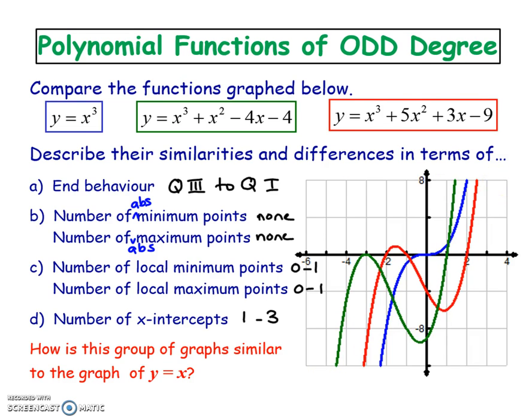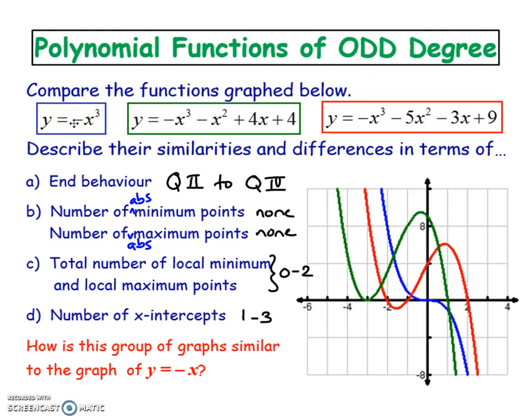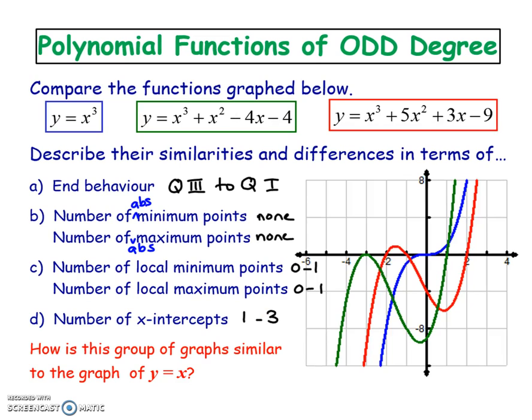They all extend from this direction to this direction. If I put a negative as a leading coefficient, we should expect that it reflects over the x-axis and goes from quadrant 2 to quadrant 4 instead. All of this information in between should be the very same for the previous graph. Let's take a look at that.